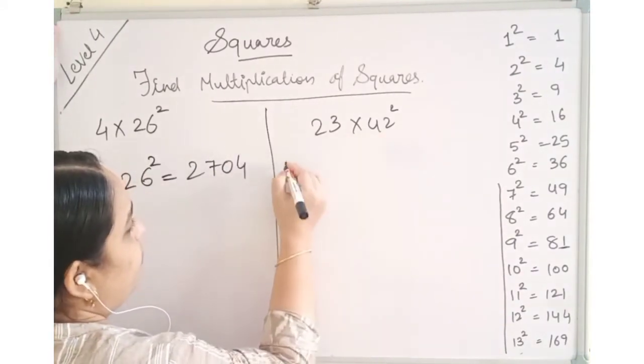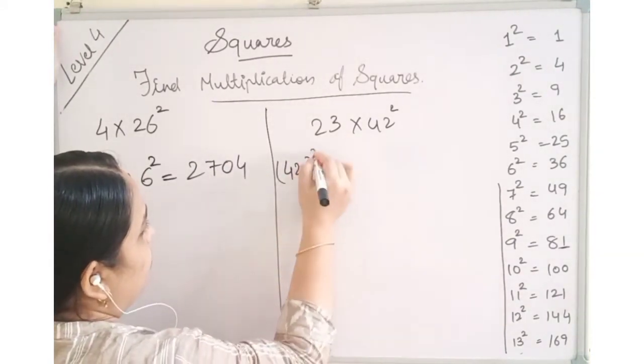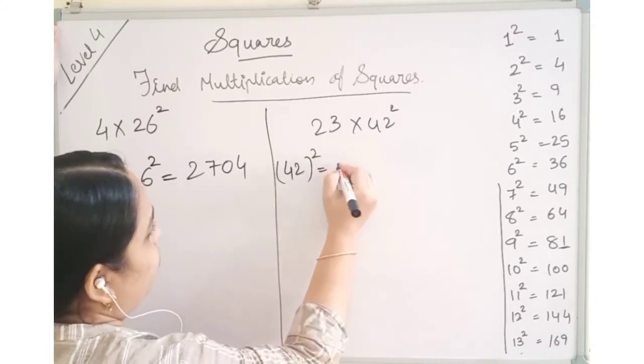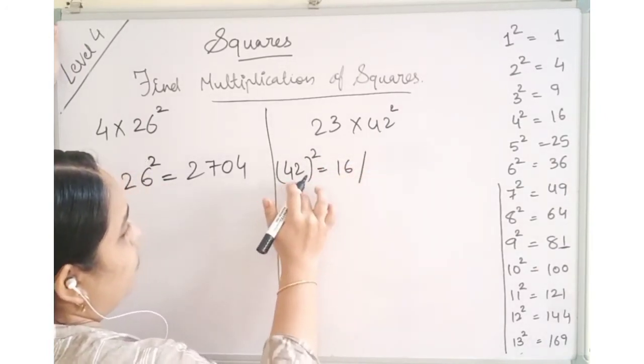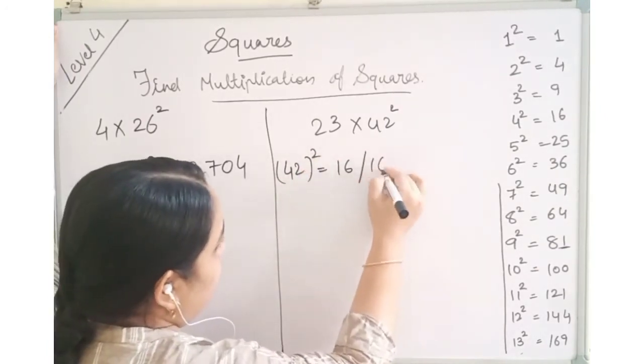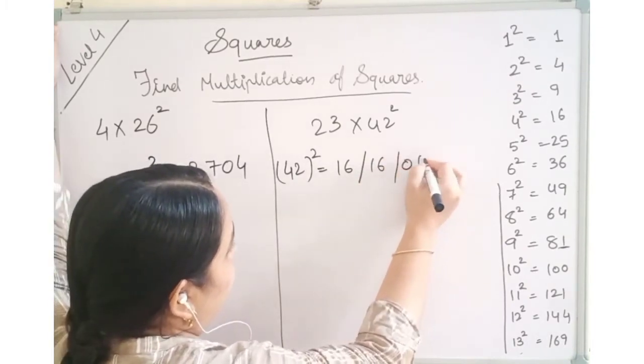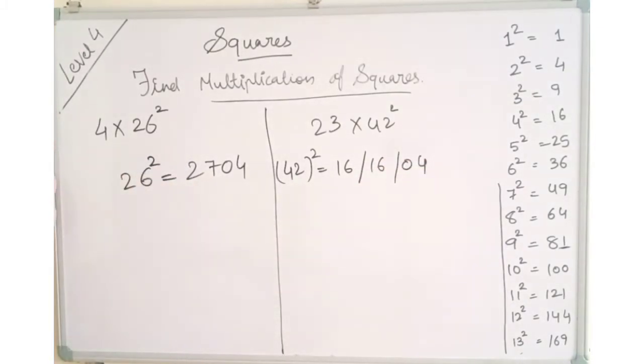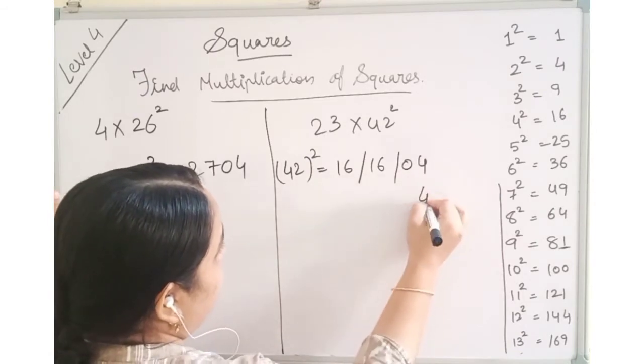Let's do 23 times 42 square. It is the bigger number now. First 42 square we will find. Which is as per the duplex, 4 fours are 16. 4 twos are 8, 8 twos are 16. Again, 2 twos are 4. This is what we have given as the number.